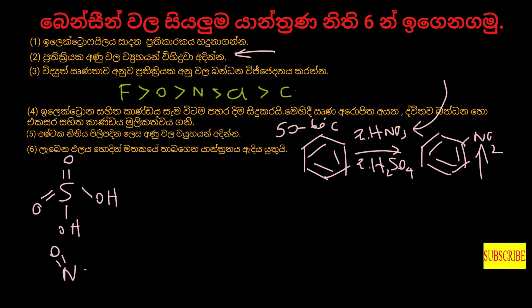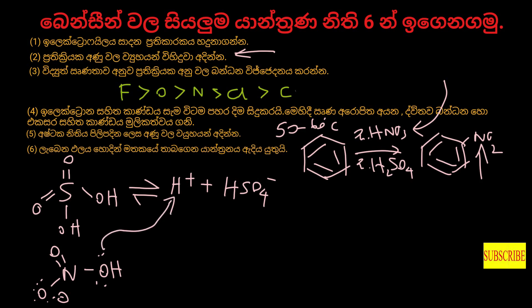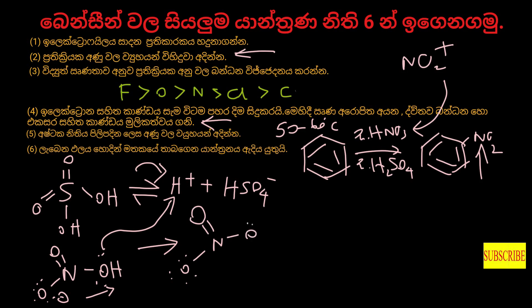We need to use H2SO4 — a strong acid. NO2 plus is the key electrophile here. The NO3 anion leaves as we form the NO2+ electrophile. This NO2 plus attacks the benzene ring to give nitrobenzene — this change alters the value at the same time.